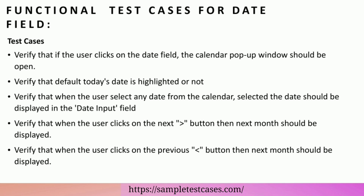Verify that when the user selects any date from the calendar, the selected date should be displayed in the date input field. Verify that when the user clicks on the next button, the next month should be displayed. Verify that when the user clicks on the previous button, the previous month should be displayed.